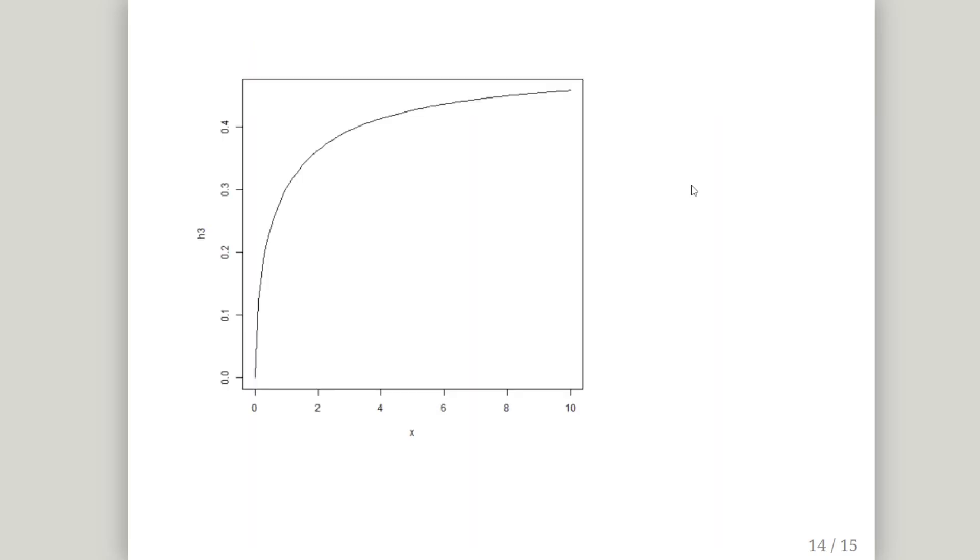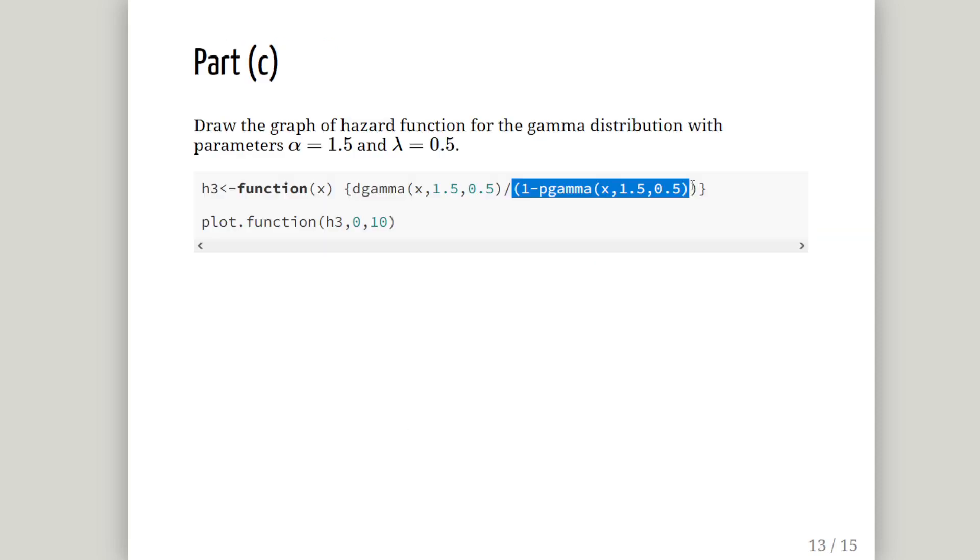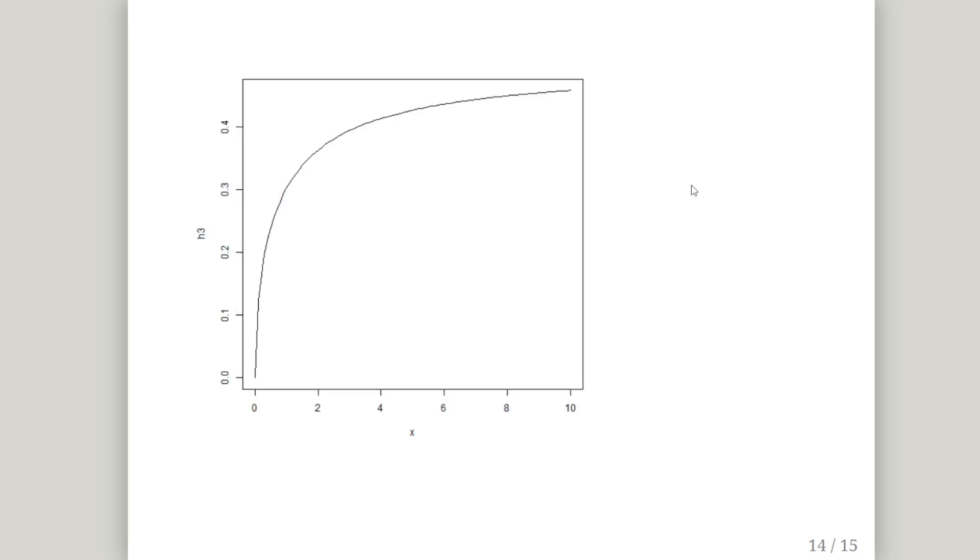Now just look at the shape of that. I'll compare that to this one here. So this is h1 and it's essentially downward, and h3 is essentially upward. They're almost like the complements of each other, sort of like the PDF and the cumulative distribution functions earlier on.